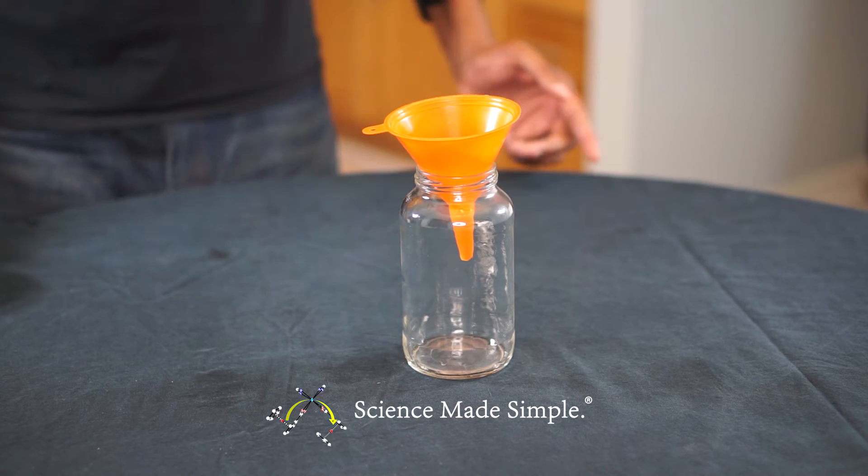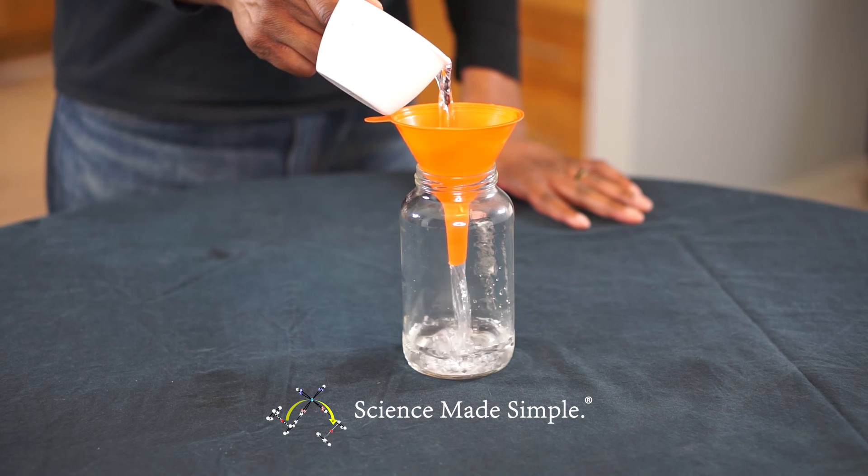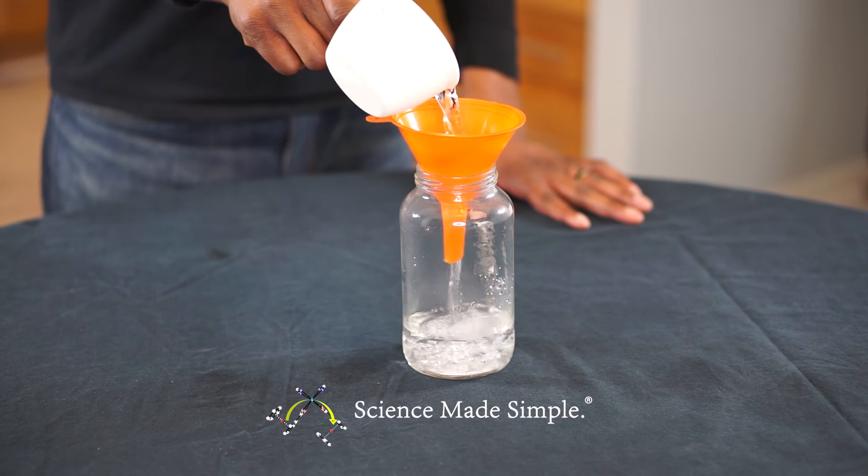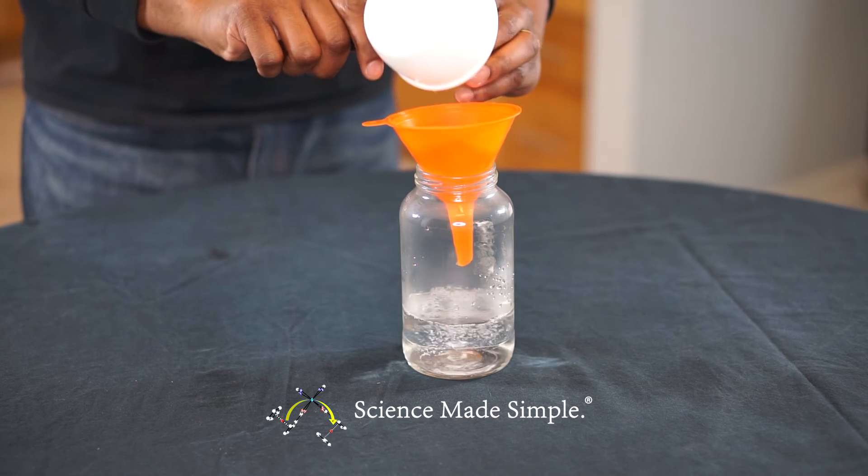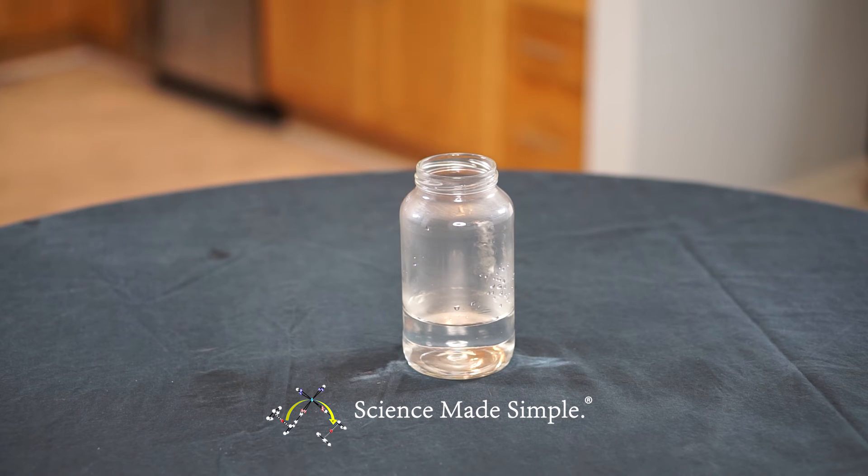Now, carefully pour the hot water into your jar. You want to make sure that the water isn't so hot that a lot of condensation forms on the inside of the jar before you finish the experiment because you won't be able to see your cloud form. Fill the jar about one-third of the way up with the hot water.